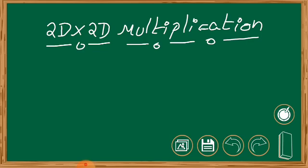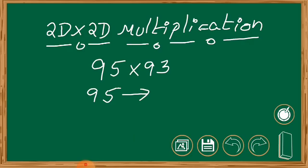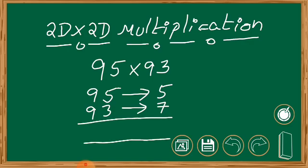So now let us consider 95 into 93. I'm going to use the base method of multiplication, which is commonly used in Vedic math. So what I'll be using here is: 95 to make it to 100, how many numbers are required? 5. And 93 to make it to 100, how many numbers are required? 7.